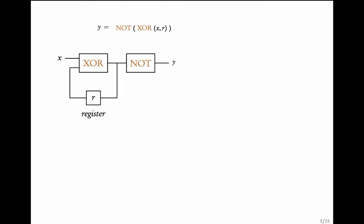Let us now look at a more complicated circuit. The inputs to this gate are a bit different: there is one standard input and the other input comes from a register which is part of the circuit. The output Y is NOT of XOR of X and R, where R is the value of the register. Additionally, the value of the register keeps changing through a feedback connection — R changes to XOR of X and the previous value of the register. Such a circuit with this kind of feedback loop is called a sequential hardware circuit.